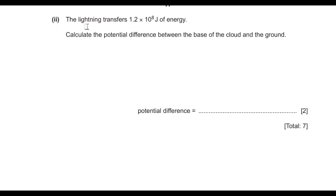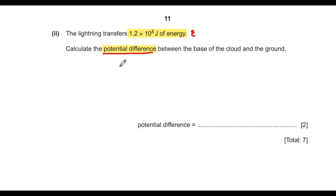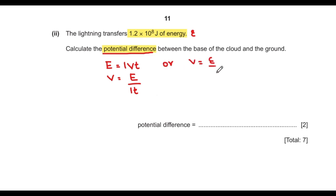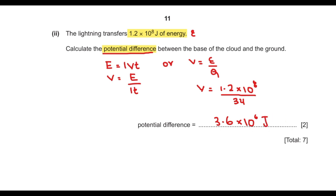The next part says: the lightning transfers 1.2 × 10⁸ joules of energy. Calculate the potential difference between the base of the cloud and the ground. Using the definition of potential difference — energy per unit charge — V = E / Q = (1.2 × 10⁸) / 34 = 3.6 × 10⁶ volts.